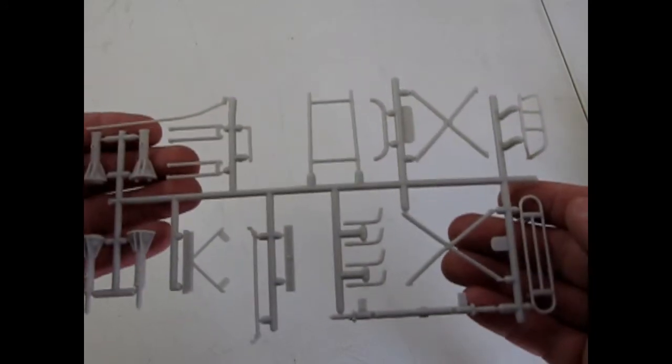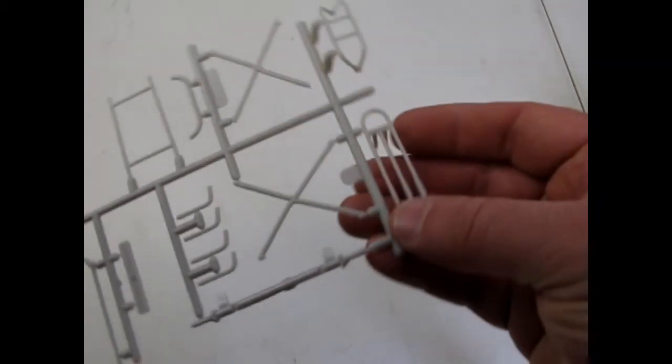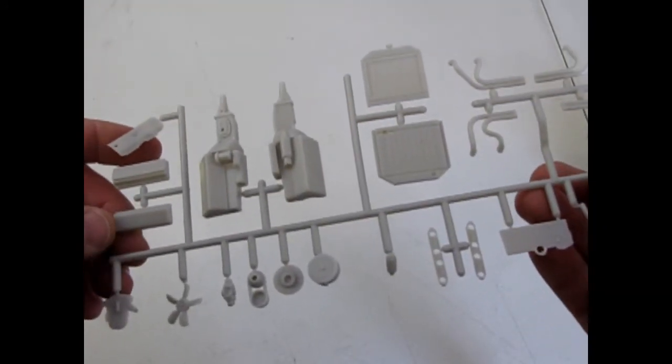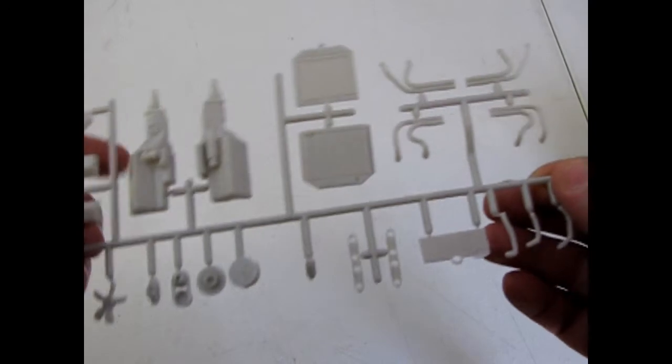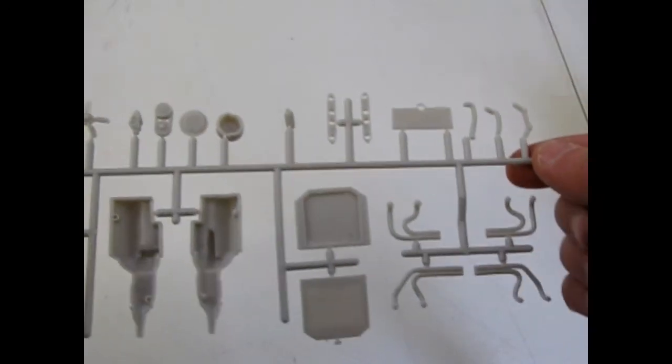And then of course we have our rear axle. And our little bumper bars. Then on this tree is our looks like a Chevy 427. As well as our radiator. It's quite detailed pieces.